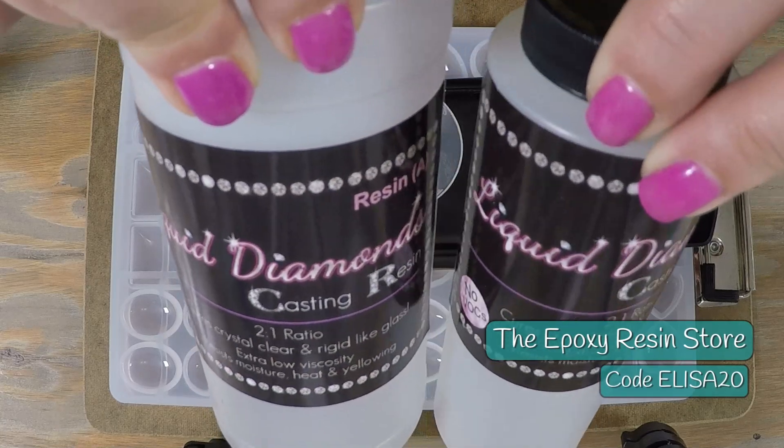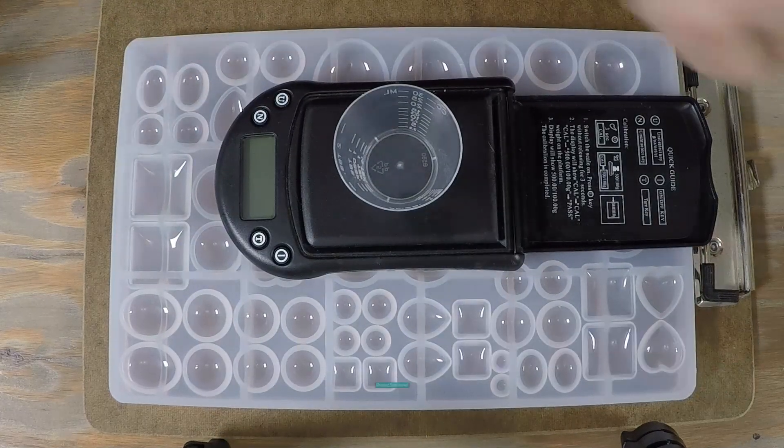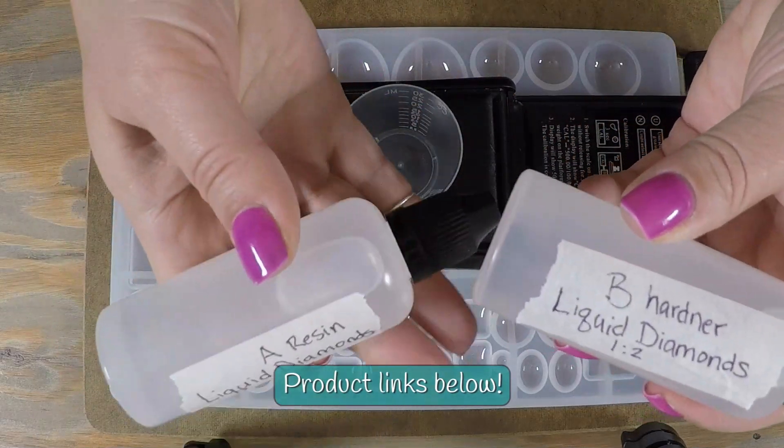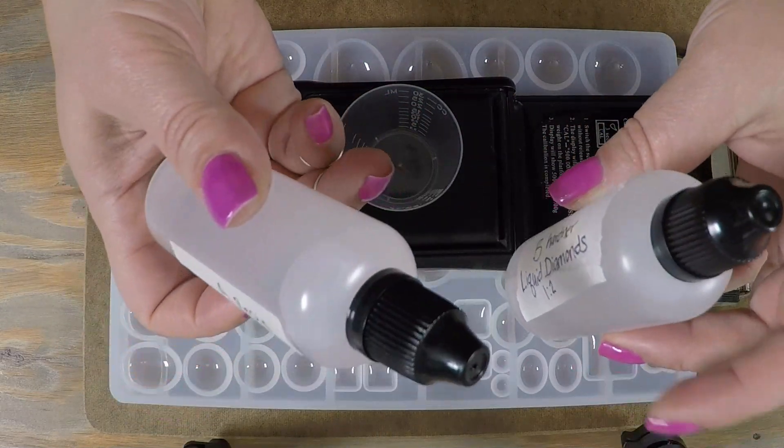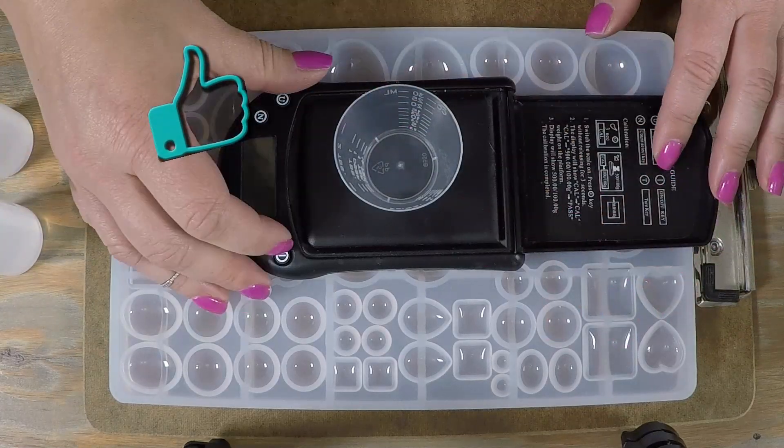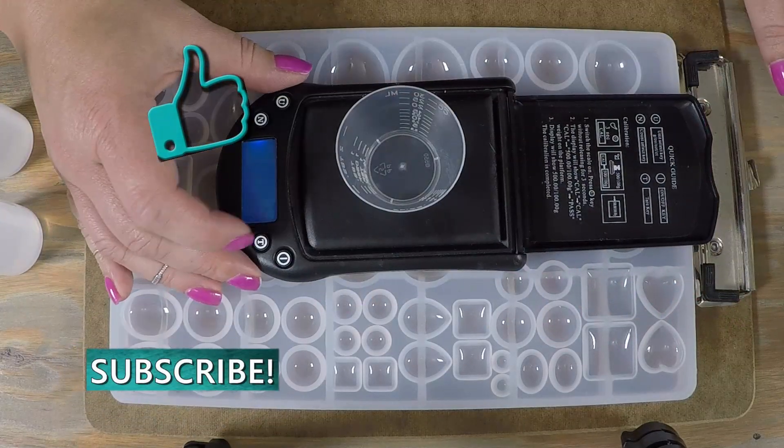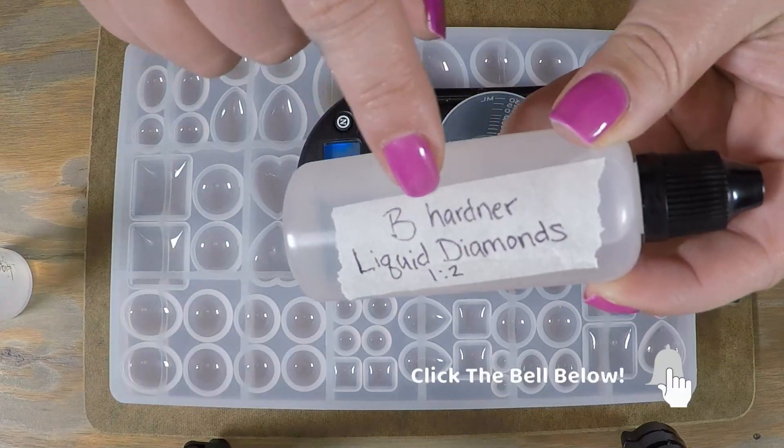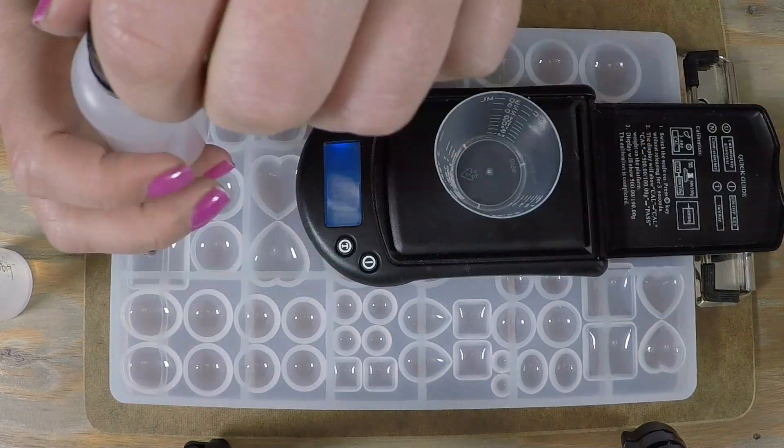There's a discount code below for 20% off, and you can find product links below like these little bottles that I put the resin in just to make it easier to do smaller amounts. I'm using a little pocket scale here to weigh it.